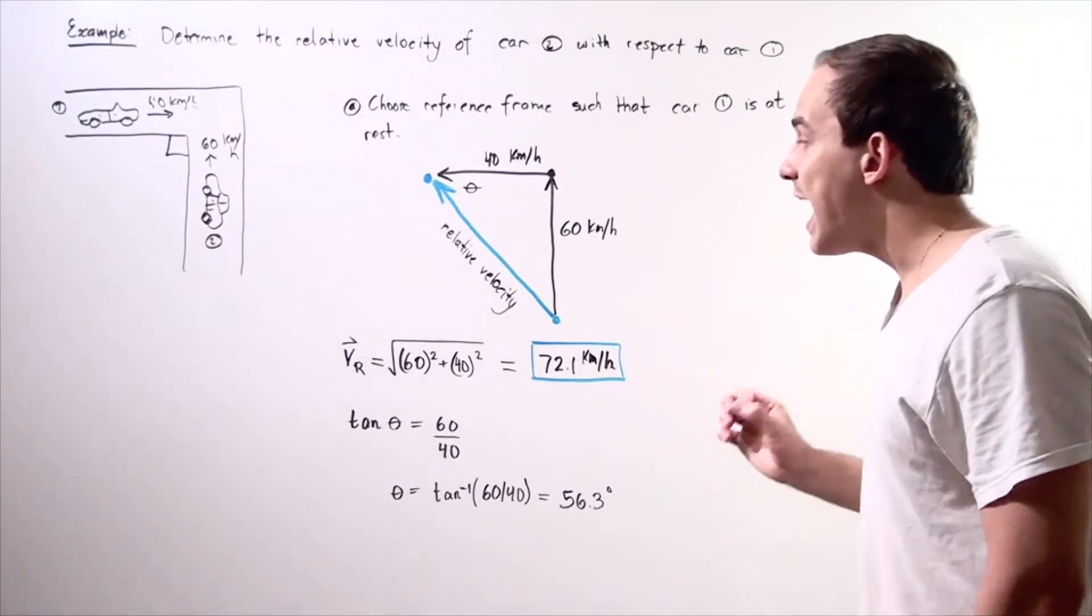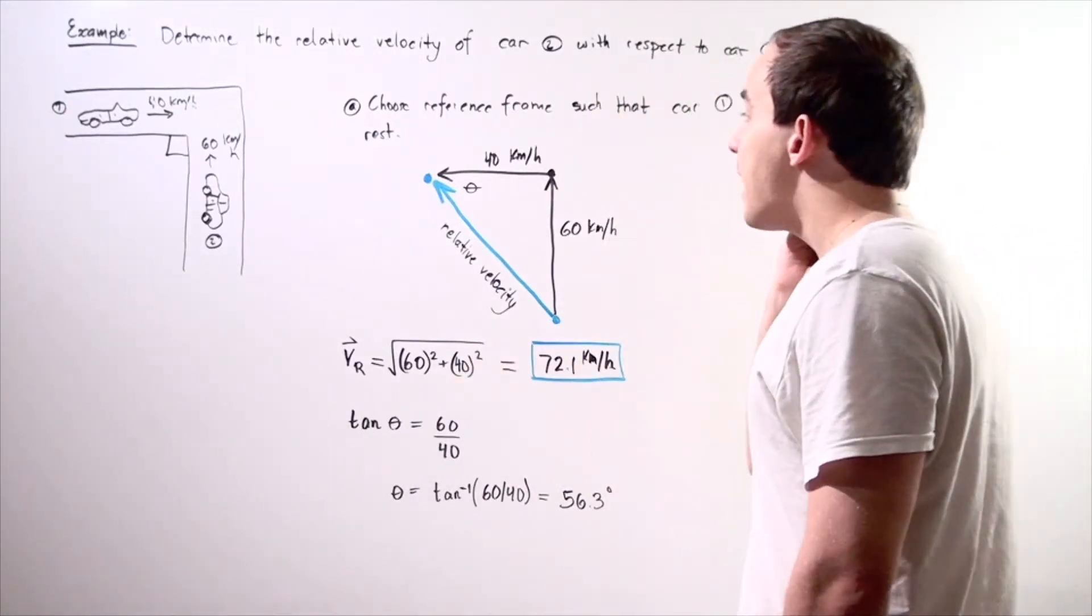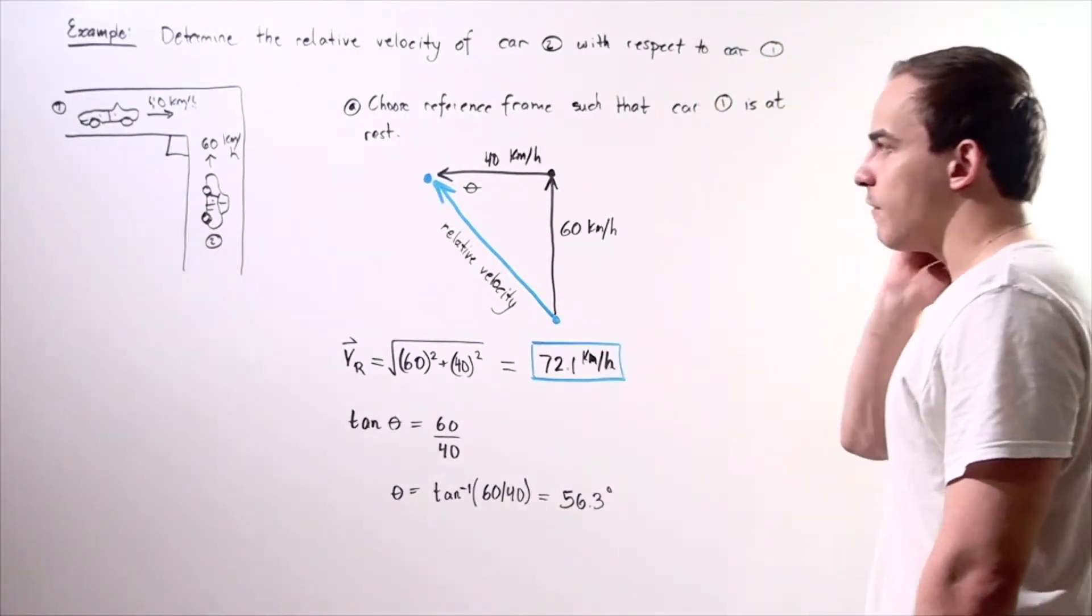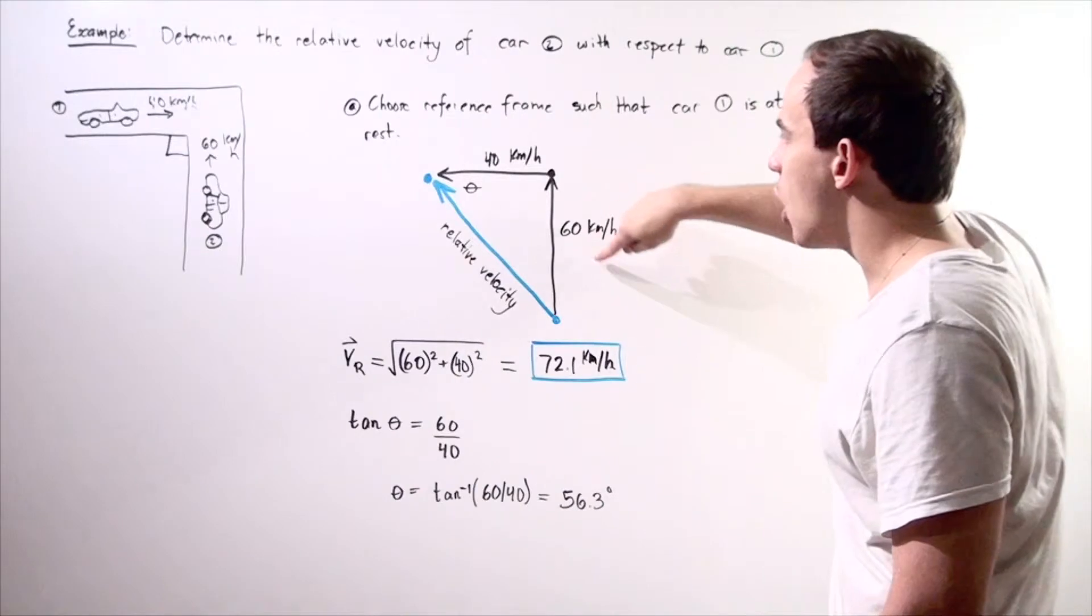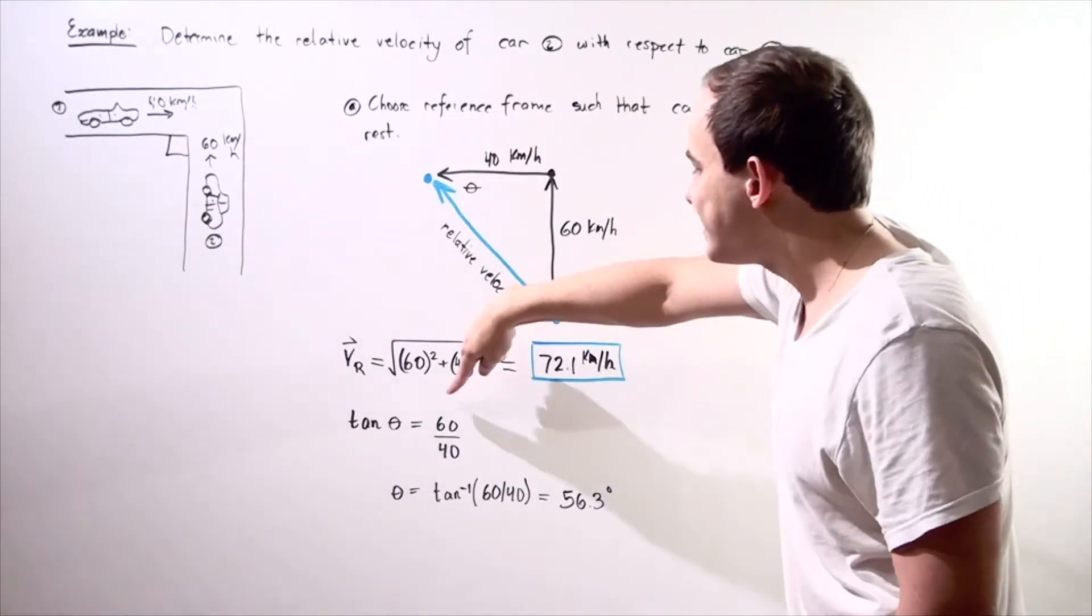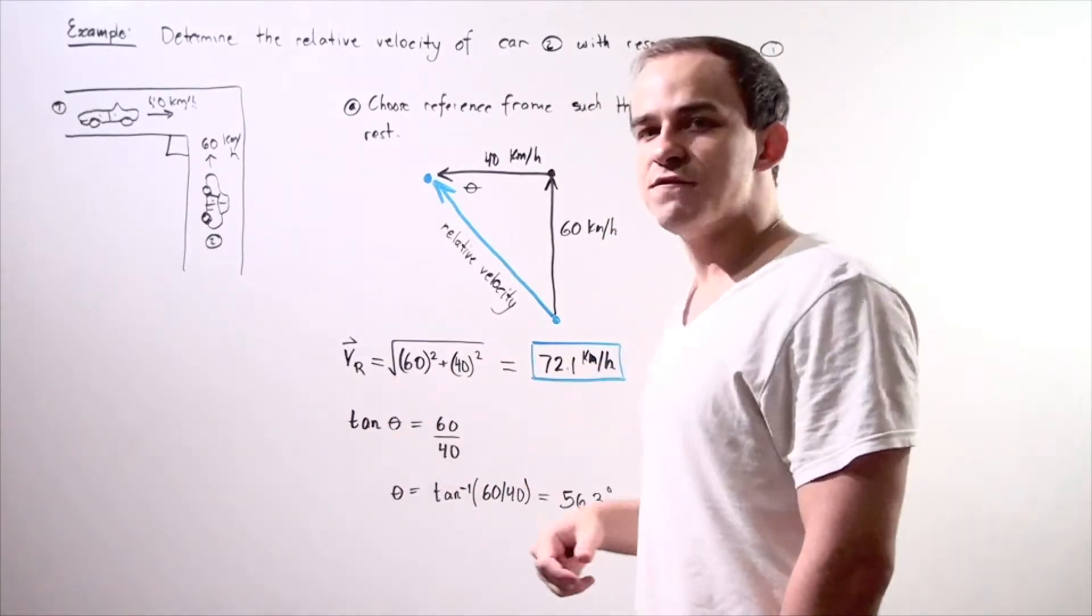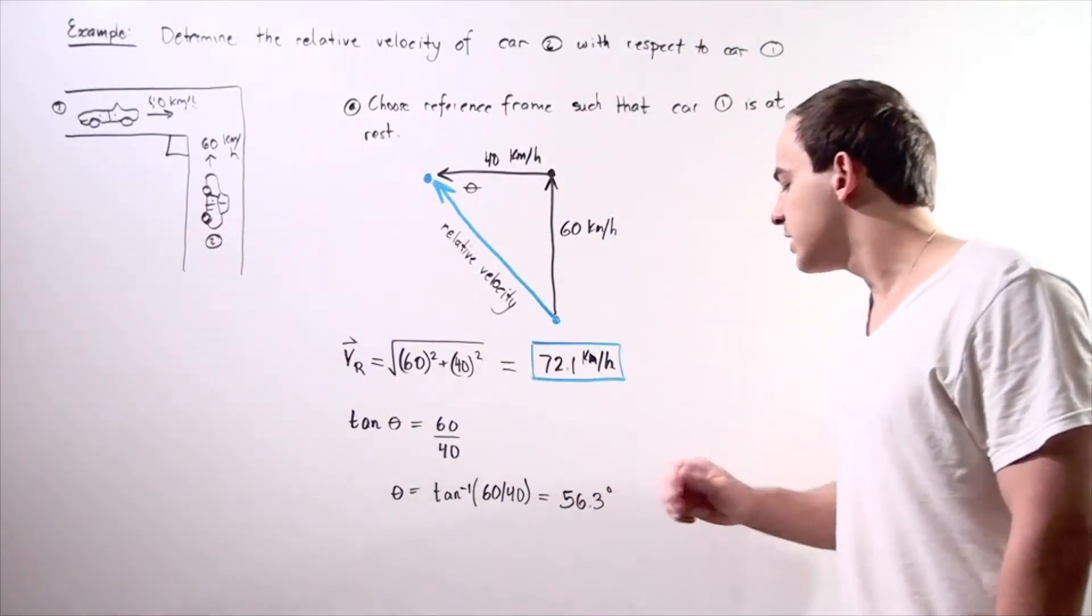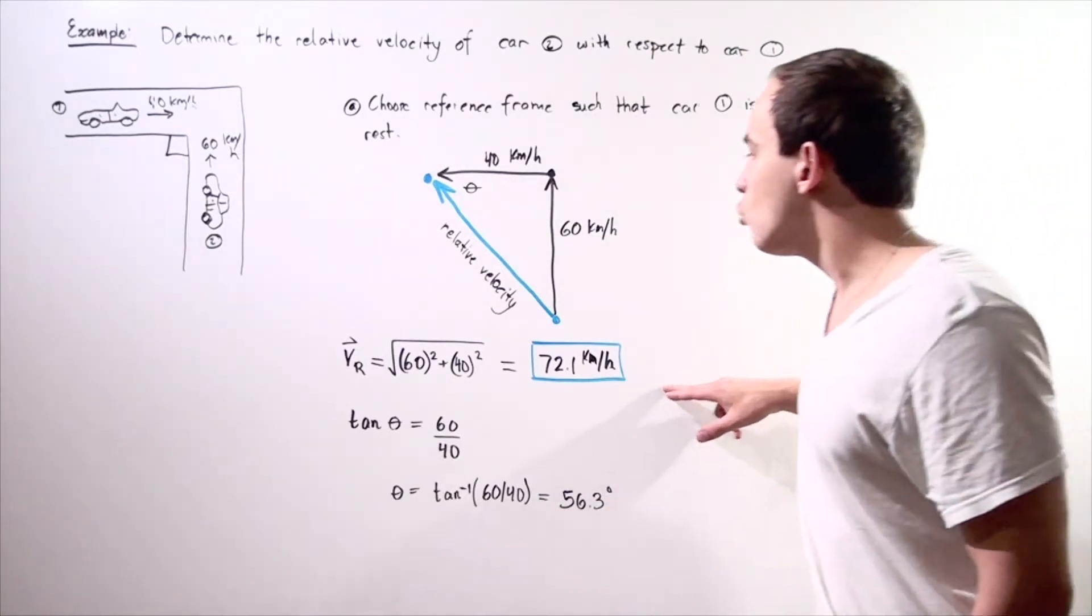What about our angle? So we can use the trigonometric tangent function so we have tangent of the angle equals opposite over adjacent so we have 60 divided by 40. We take the inverse of this function and we find that the angle is approximately 56.3 degrees.